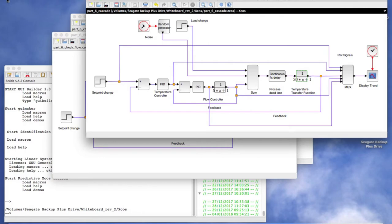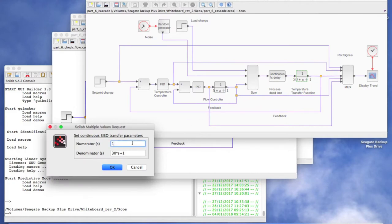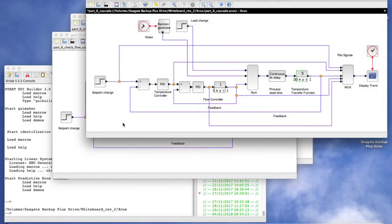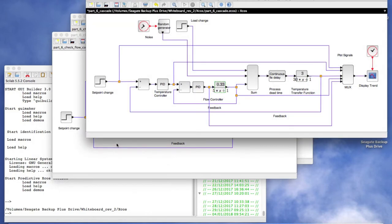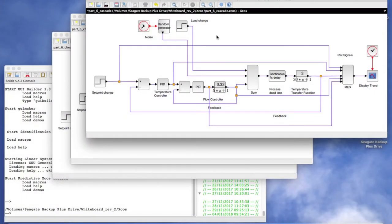Now we will mimic cutting the process flow to one third of the previous value. Before we look at these two loops working together, let's look at the response for each of these loops working independently. First, the temperature controller.